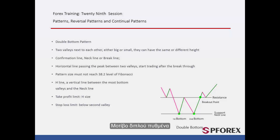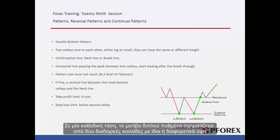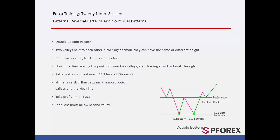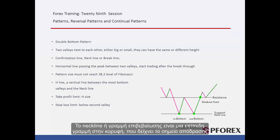Double Bottom Pattern: On a downward trend, a double bottom pattern is formed by two consecutive valleys with different or the same height and width. The neckline, or confirmation line, is a level line on the peak point which indicates the breakout point.